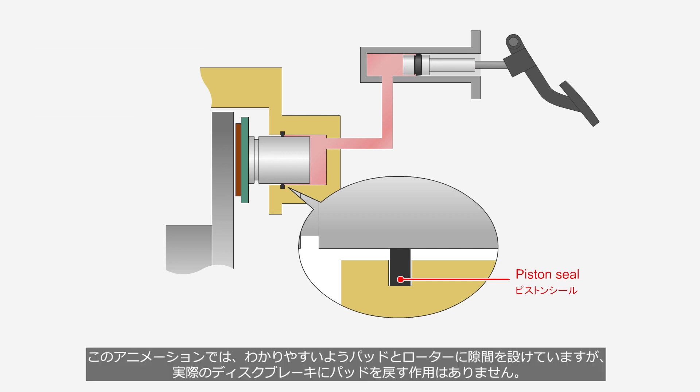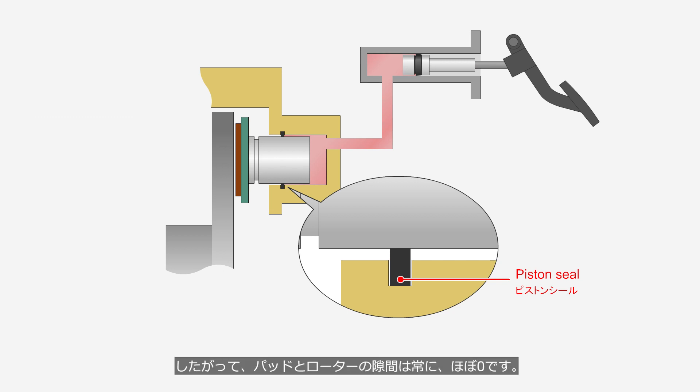In this animation, a clearance is shown between the pad and the rotor for clarity. But in actual disc brakes, there is no action to retract the pads. Therefore, the clearance between the pads and the rotor is always nearly zero.